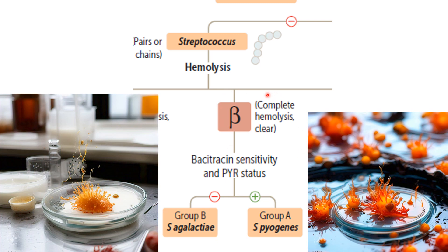Beta hemolytic bacteria correspond to 'beta males,' which might be considered sinful — specifically 'bacitracin sinful.' The two groups are Strep pyogenes and Strep agalactiae. For Strep pyogenes, 'pyrogenes' reminds me of pyrotechnics and fire — these bacteria are kind of on fire. For Strep agalactiae, the 'lact' part reminds me of lactose and milk, so we picture this bacterium jumping into a glass of milk to cool down from the heat.